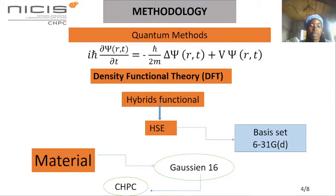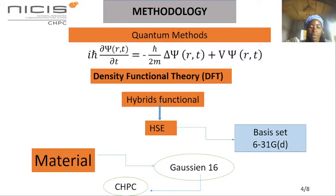To carry out our study, we will work with quantum methods. These methods are the result of the approximate solution of the Schrödinger equation. More precisely, we use the density functional theory, DFT, through its hybrid functional HSE, which is the Heyd-Scuseria-Ernzerhof functional. The HSE has been associated to the 6-31G, which is a basis introduced by Pople. These methods are implemented in Gaussian 16, which is the main tool used to generate our output files.